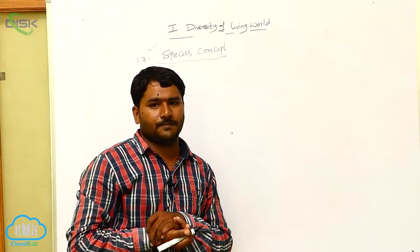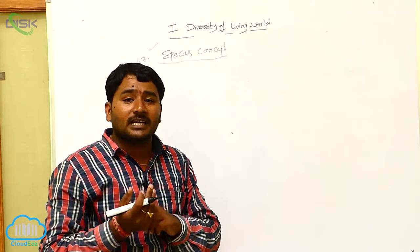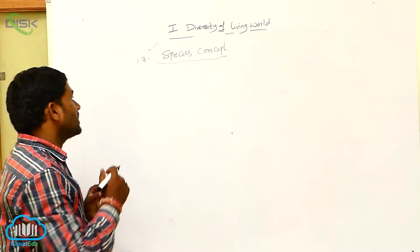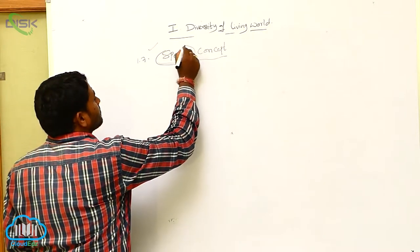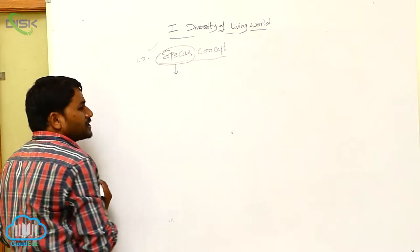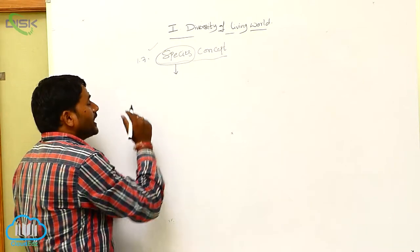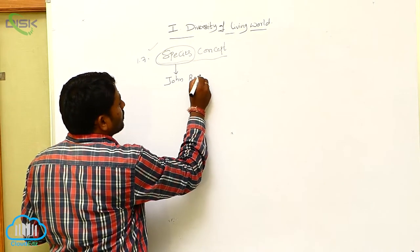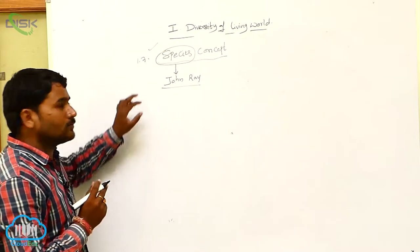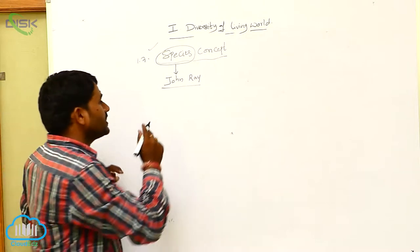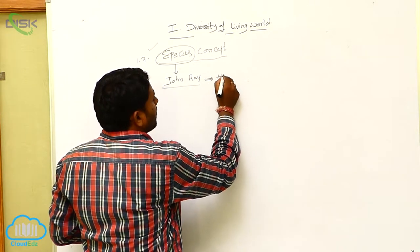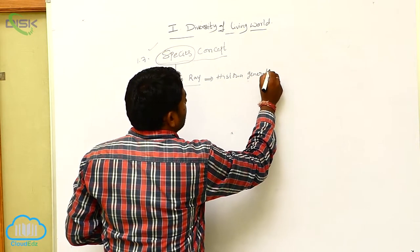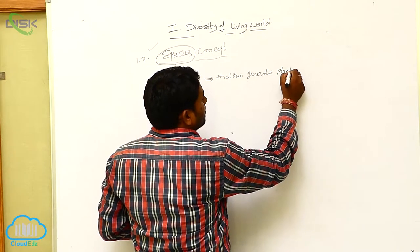What is species and what are the characters exhibited by a species? The word 'species' was used for the first time by the scientist John Ray in his book Historia Generalis Plantarum.